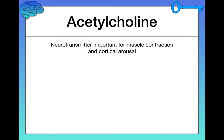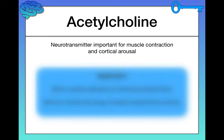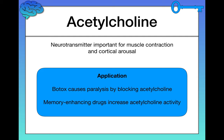Next, we have acetylcholine, a neurotransmitter important for two different functions: muscle contraction and cortical arousal. To break that down — cortical comes from cortex, basically meaning brain, and arousal in psychology typically just means activation. So cortical arousal means brain activation. In terms of applications, Botox causes paralysis by blocking acetylcholine, and memory-enhancing drugs increase acetylcholine activity — taking advantage of those two different functions.